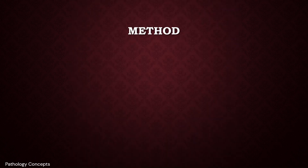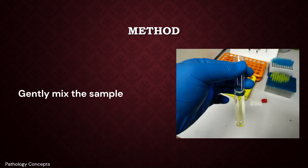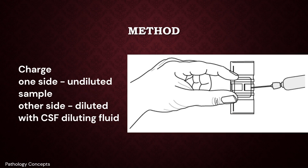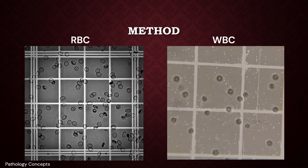Now let's see the method of counting. First, gently mix the CSF sample. Charge one side of the Neubauer chamber with the sample without any dilution. Charge the other side of the Neubauer chamber with an appropriate dilution with CSF diluting fluid. Let it stand for 5 minutes and observe under the microscope.